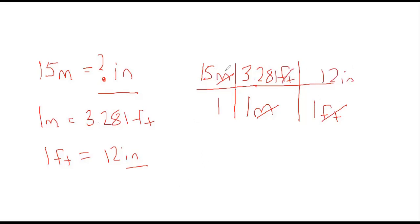Now I'm going to take everything on the top and multiply it together and divide by everything on the bottom. So essentially my answer is going to be 15 times 3.281 times 12. Put that in my calculator.